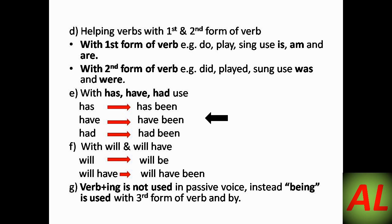The next rule is about 'has,' 'have,' and 'had.' When these are used in an active voice sentence and changed to passive voice, we add 'been': 'has' becomes 'has been,' 'have' becomes 'have been,' and 'had' becomes 'had been.' For 'will' and 'will have': with 'will' we add 'be,' making it 'will be,' and with 'will have' we add 'been,' making it 'will have been.'